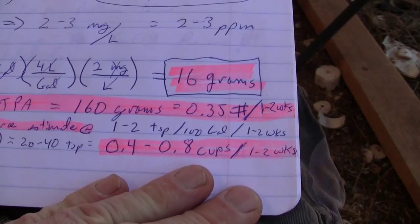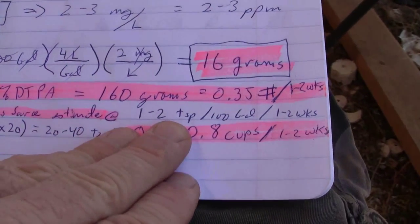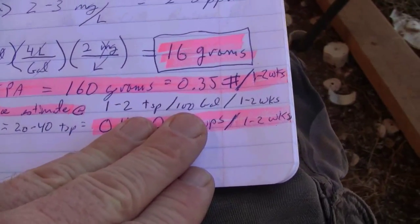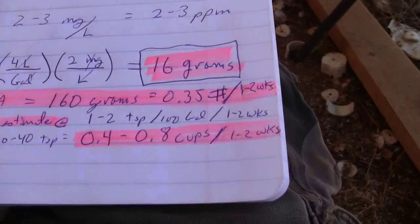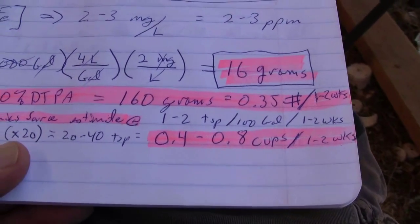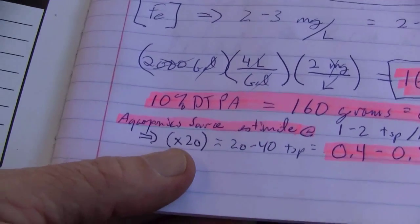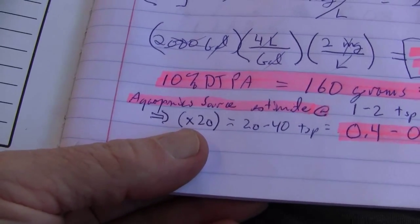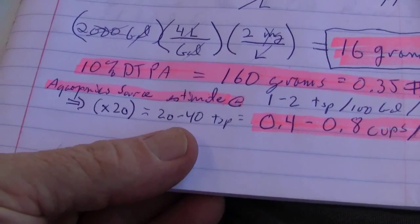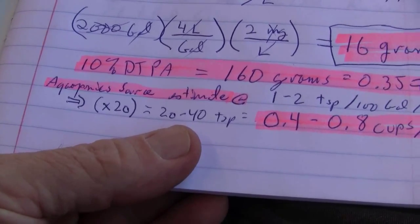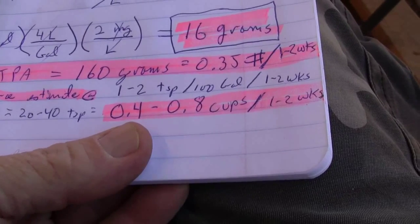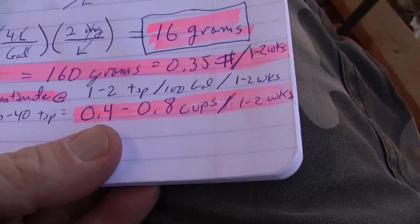Aquaponics Source, which is another estimate, they say 1 to 2 teaspoons per 100 gallons every 1 to 2 weeks. So for my system, 2,000 gallons, about half the size of Bright Agrotech, I'd multiply 100 gallons by 20 to get to 2,000 gallons. So I've got to multiply their 1 to 2 teaspoons by 20. That's 20 to 40 teaspoons, equal to 0.4 to 0.8 cups every 1 to 2 weeks. So about a half a cup.